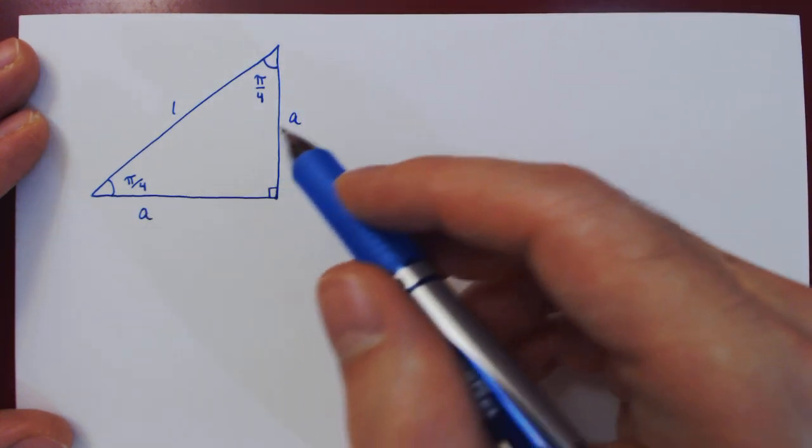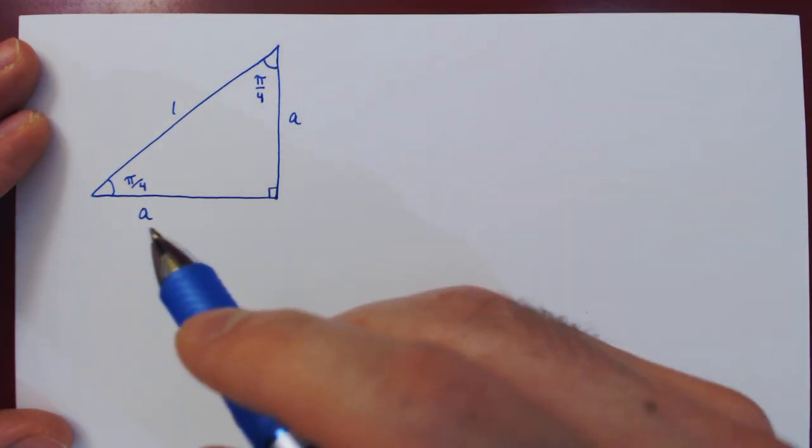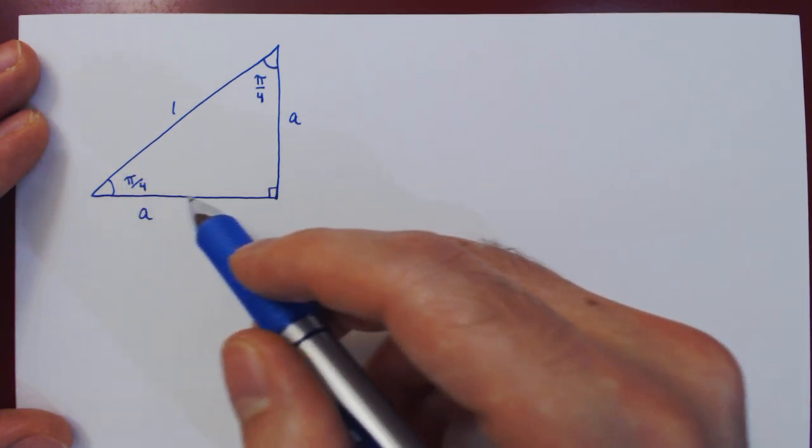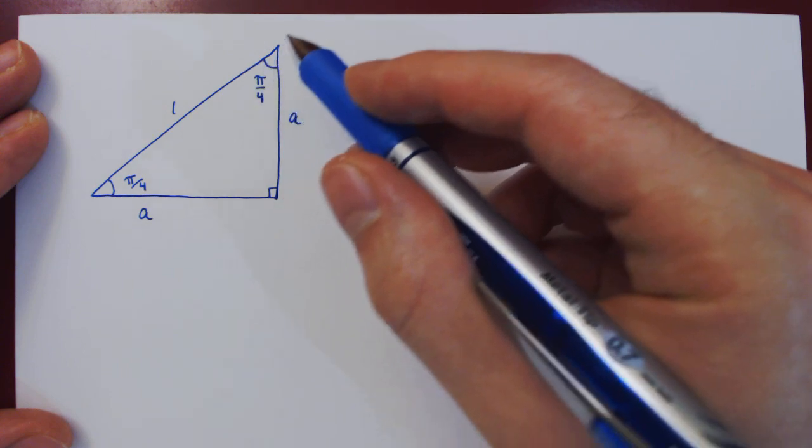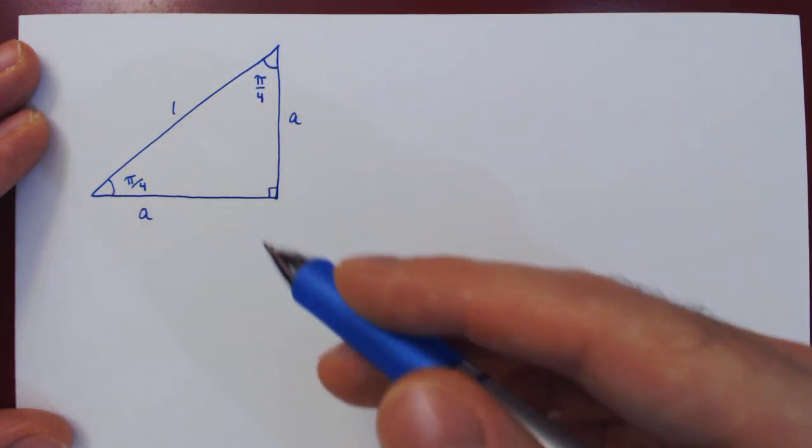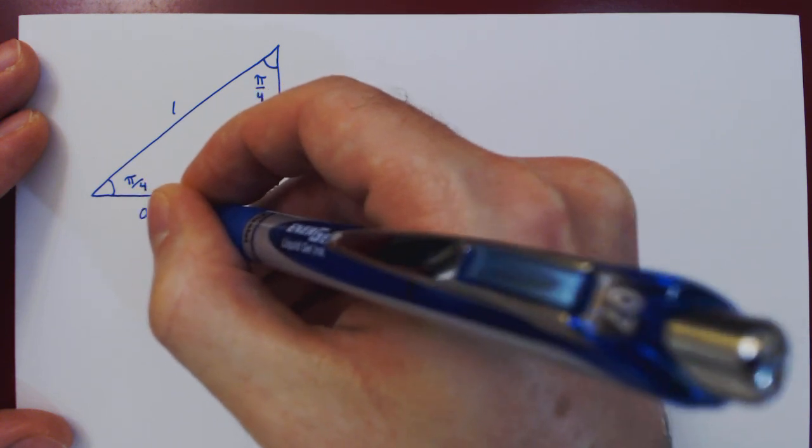And now let's express A in terms of sine and cosine. So if you take cosine of this angle, you get the adjacent side over the hypotenuse, which is 1, so you simply get the adjacent side. So A is cosine of pi over 4.